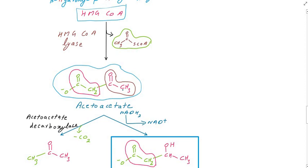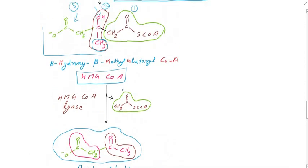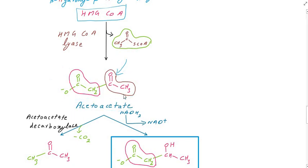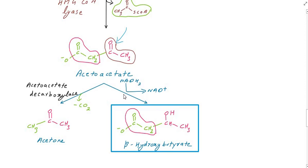The structure of acetoacetate is CH3-C(=O)-CH2-C(=O)-O minus. To form acetoacetate, you can use two methods: acetoacetate decarboxylation or use of NADH2 reduction.